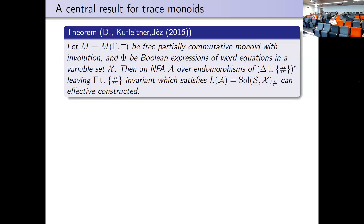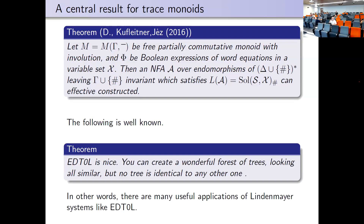In our paper with Murray, we rely on the fact that constructions of NFAs were possible for free partially commutative monoids — trace monoids — which is a crucial central result. EDT0L is nice because you can create a forest of trees that all look similar but no two are identical — one application of EDT0L. I mention this was perhaps done in Lord of the Rings, being from New Zealand, but that's speculative.